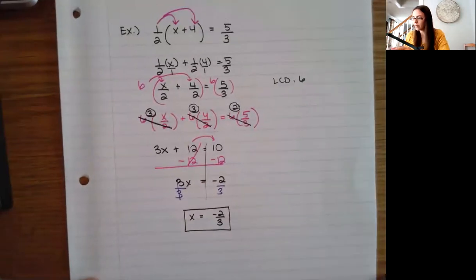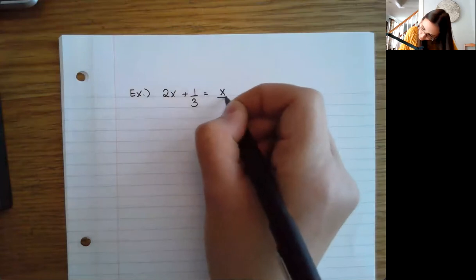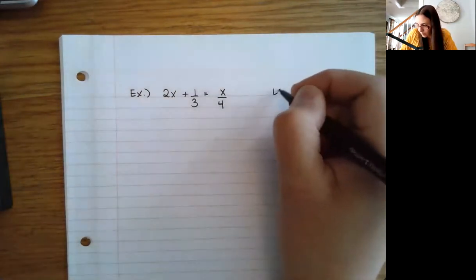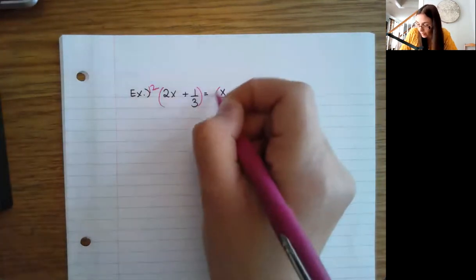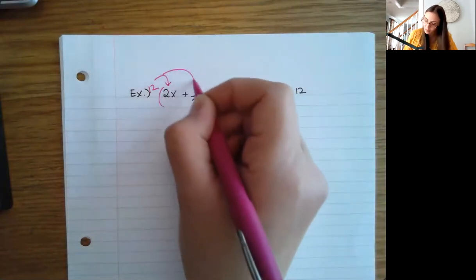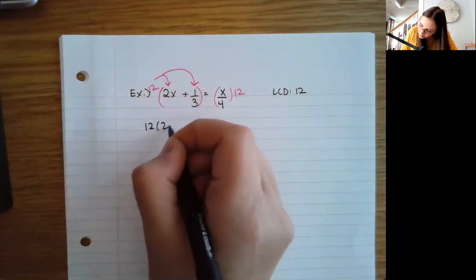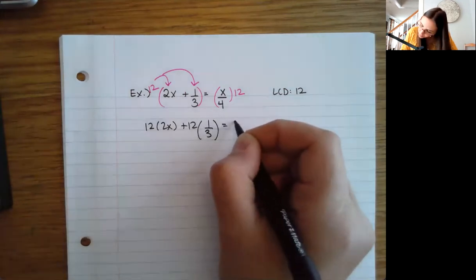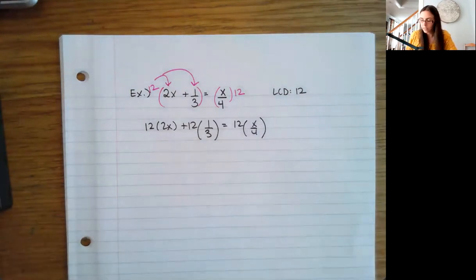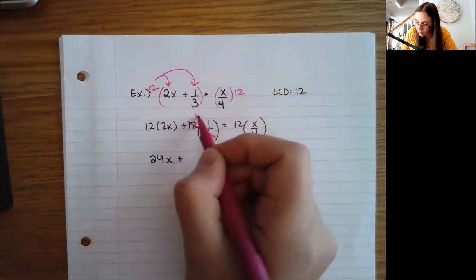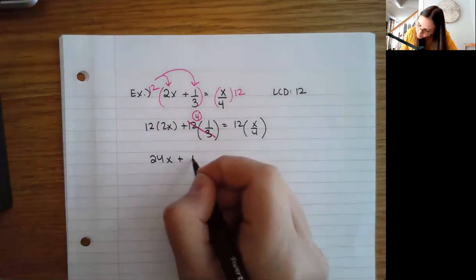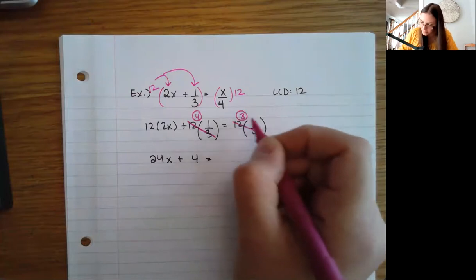Let's do one last example. Here I have denominators of three and four, which gives 12 for my least common denominator. So I multiply both sides by 12. I don't have any parentheses, which keeps it a little easier. Distributing: 12 times 2x plus 12 times 1/3 equals 12 times x/4. That's 24x, then 12 divided by 3 is 4, so four times 1 is 4.